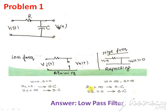At higher frequency, the inductor is an open circuit and the capacitor is a short circuit. With the capacitor short-circuited, the output voltage is zero, so the input is not allowed to reach the output terminal — that means it is rejected. From these two cases we conclude that